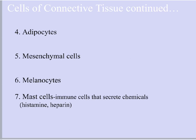The fourth type of cell found in connective tissue is adipocytes — 'adipo' means fat, so these are essentially fat cells. They accumulate lipids and therefore provide a variety of functions: insulation, energy storage (since lipids are a great energy source), and support and protection for internal organs.